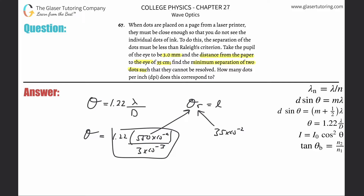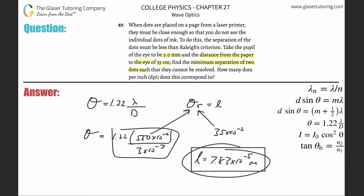This works out to be a minimum distance between the two dots of 7.83 times 10 to the minus fifth meters. And that says how many dots per inch — DPI, dots per inch.